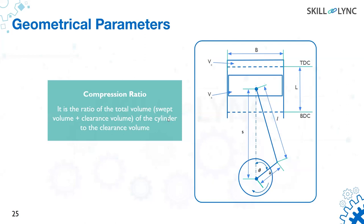Compression ratio is very important for understanding engine performance. For a petrol engine it is less than 12, and for a diesel engine it is greater than 16 or 17 — that is how the conventional system works. This compression ratio is very important when considering engine specifications.